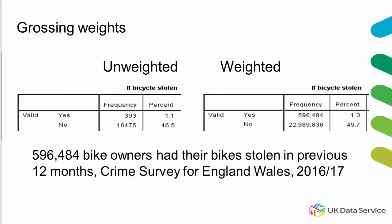Weights can also be used to make the sample look the same size as the population. Known as a grossing weight, they can help us describe the prevalence of social phenomena. For example, with the Crime Survey for England and Wales, they help us describe rates of crime. These can be useful, but we need to remember the sample is much smaller than it looks and to check how the statistics software is calculating the precision of the estimates.